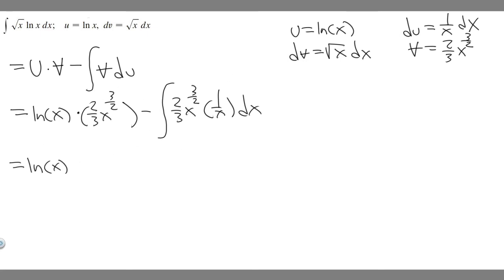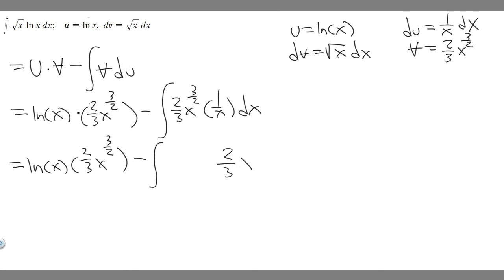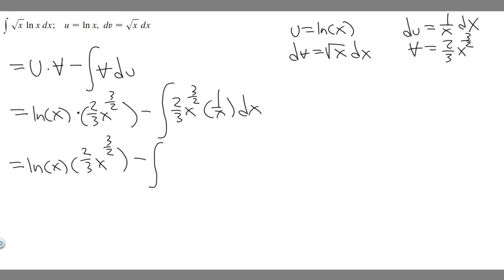So we have ln(x) times 2/3 · x^(3/2) minus the integral. Notice we can multiply 1/x times 2/3 · x^(3/2), which is 2/3 · x^(3/2) over x. When we divide by x, we're subtracting 1 from the exponent, so x^(3/2) becomes x^(1/2). The new integral is the integral of 2/3 · x^(1/2) dx.